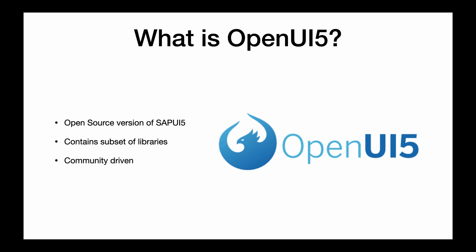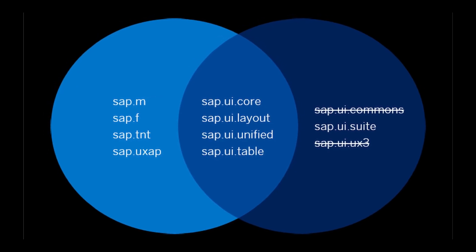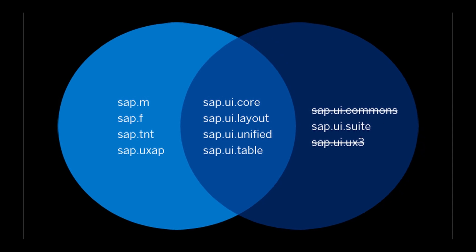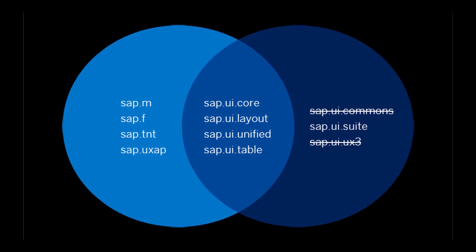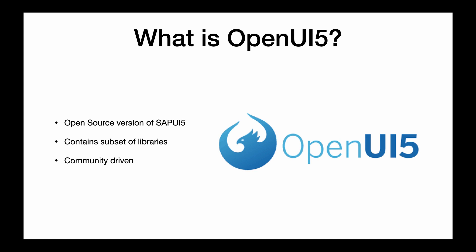Now we know what SAPUI5 and Fiori are — there's also OpenUI5. OpenUI5 is just the open source version of SAPUI5. It contains a subset of libraries and tools, so not all libraries found in SAPUI5 are the same as in OpenUI5. Most of the time, libraries in SAPUI5 are released first and then the OpenUI5 version comes after. Since it's open source, anyone can try to contribute to the source code on GitHub.